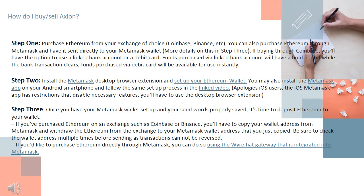How do I buy and sell Axion? Step 1: Purchase Ethereum from your exchange of choice — Coinbase, Binance, etc. You can also purchase Ethereum through Metamask and have it sent directly to your Metamask wallet. More details on this in Step 3.